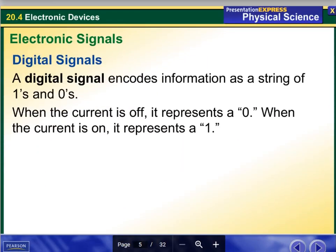Then we have a digital signal. A digital signal encodes information as a string of ones and zeros. When the current is off, it represents a zero. When the current is on, it represents a one.